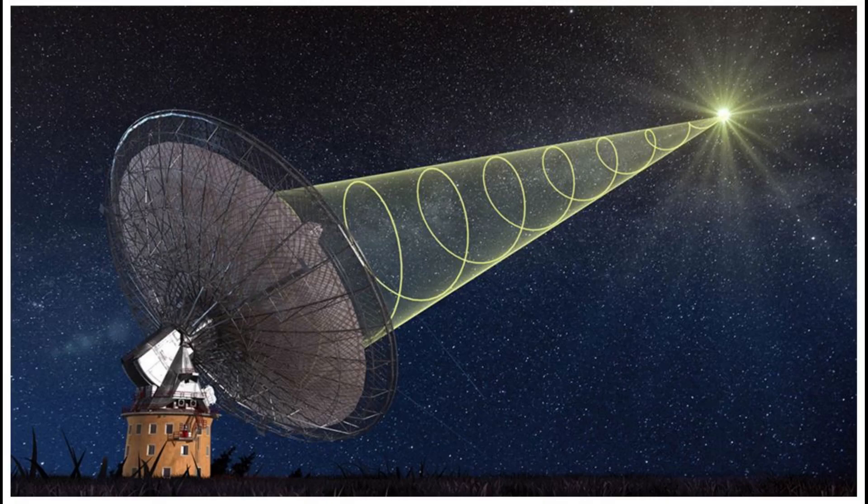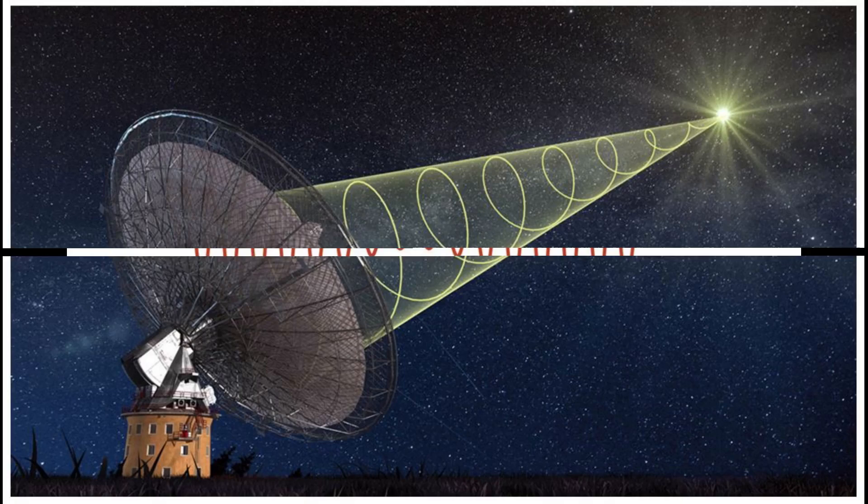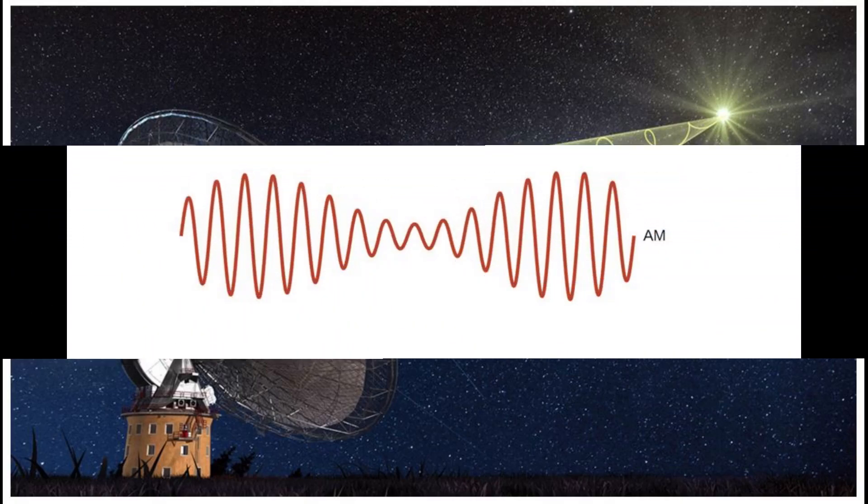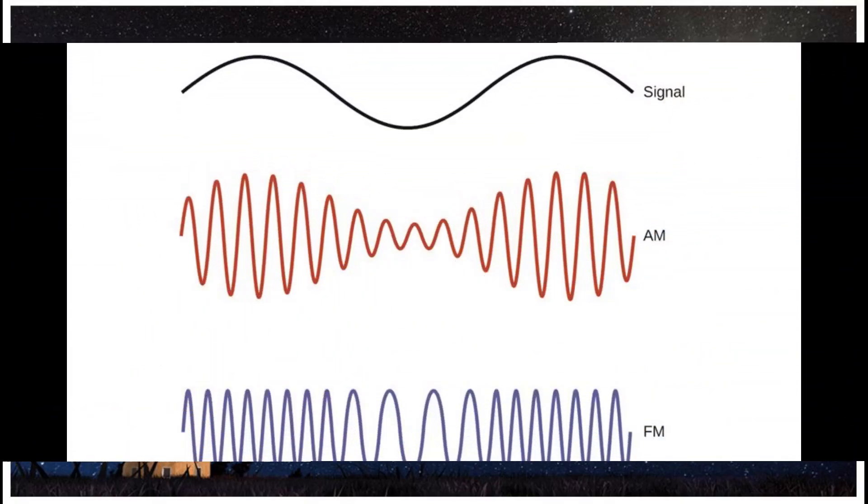Radio waves are a type of electromagnetic radiation with the lowest frequencies and the longest wavelengths in the electromagnetic spectrum, typically with frequencies of 300 gigahertz and below. At 300 gigahertz, the corresponding wavelength is 1 millimeter. At 30 hertz the corresponding wavelength is 10,000 kilometers, longer than the radius of the Earth.